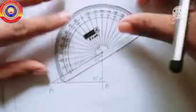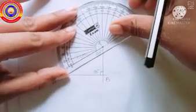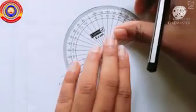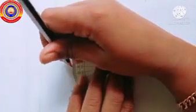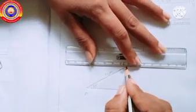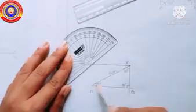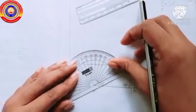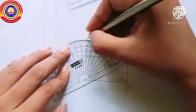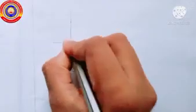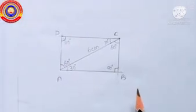On the other side of the diagonal, draw an angle of 30 degrees at point C and another angle of 60 degrees at point A. Join these two points to get point D. Erase the unnecessary parts and we will get the required rectangle.